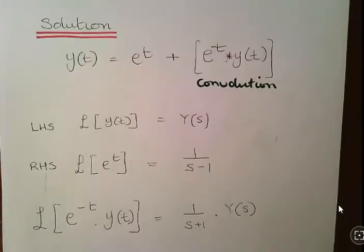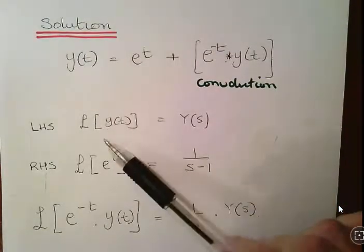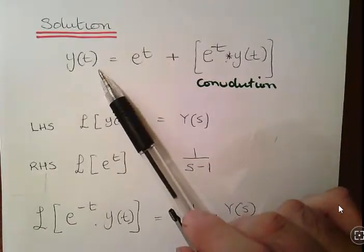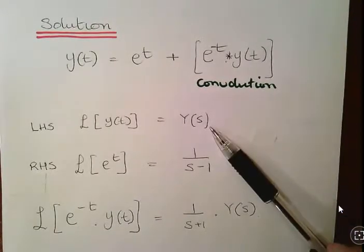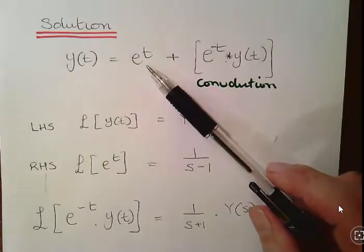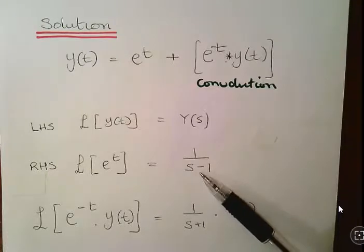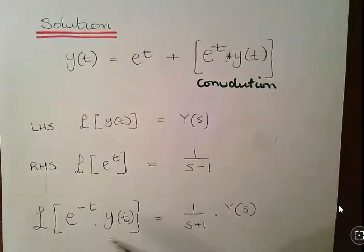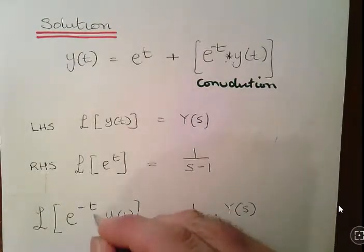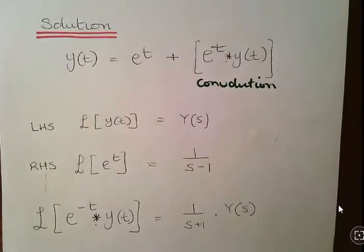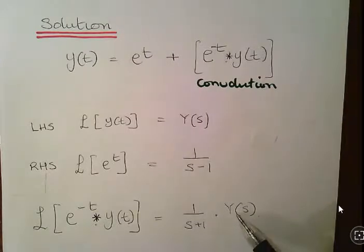Left hand side, let's get an expression for this. That's just y of s. Then this component here, the right hand side, e to the t, from the formula sheet, that is 1 over s minus 1. Now this part here, the convolution, is the Laplace transform of e to the minus t, which is 1 over s plus 1, and the Laplace transform of y of t, which is again y of s.